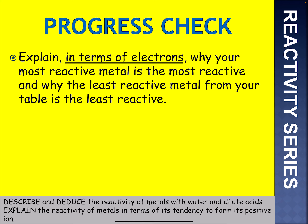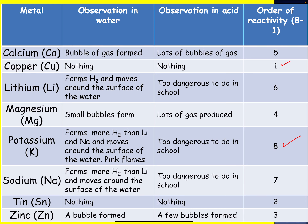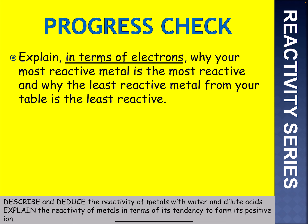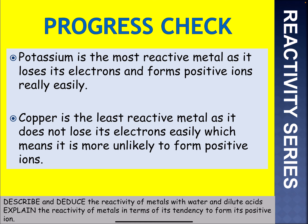Progress check in terms of electrons: why is your most reactive metal the most reactive, and why is the least reactive metal from your table the least reactive? Potassium is the most reactive metal as it loses electrons and forms positive ions really easily. Copper is the least reactive metal as it does not lose its electrons easily, which means it is more unlikely to form positive ions.